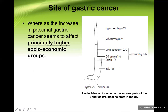Increase in proximal gastric cancer seems to principally affect the higher socioeconomic group, though the mechanism is not clearly known. Teachers can simply ask where in the stomach gastric cancer commonly occurs — antral area, body, cardiac end, and such — without focusing heavily on socioeconomic differences.